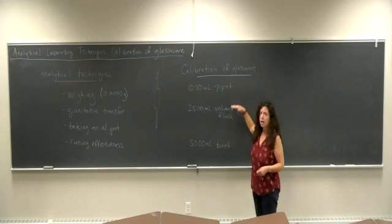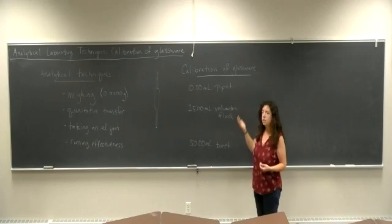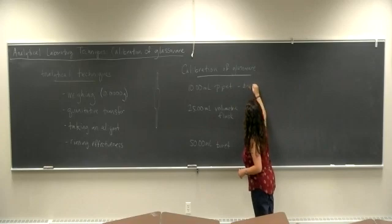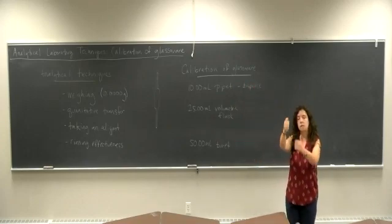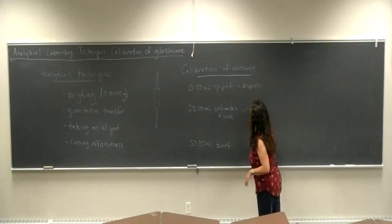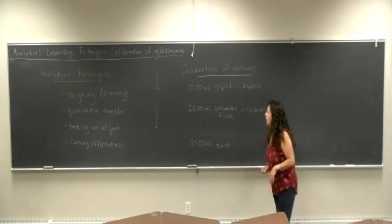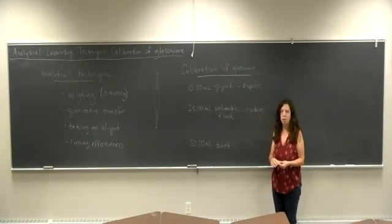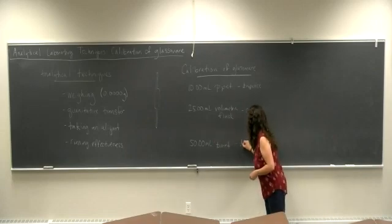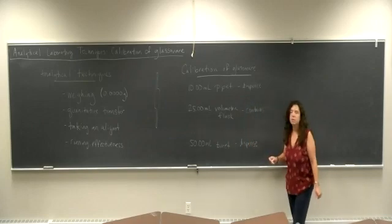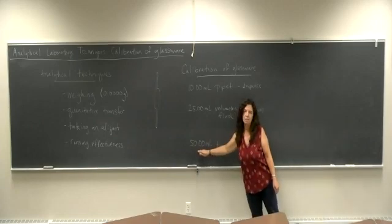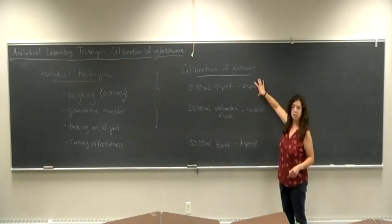There's different types of volumetric glassware. There's those that dispense a certain volume, in particular the pipette here dispenses a set volume. We also have volumetric glassware like the volumetric flask which contains a certain volume. If it's filled up to the line it will contain exactly this amount. The burette is something that we will have that will dispense, but the burette is a little different since it has a graduated amount. We can dispense ranges of volumes within that 50 ml whereas this pipette will only deliver that 10 ml.